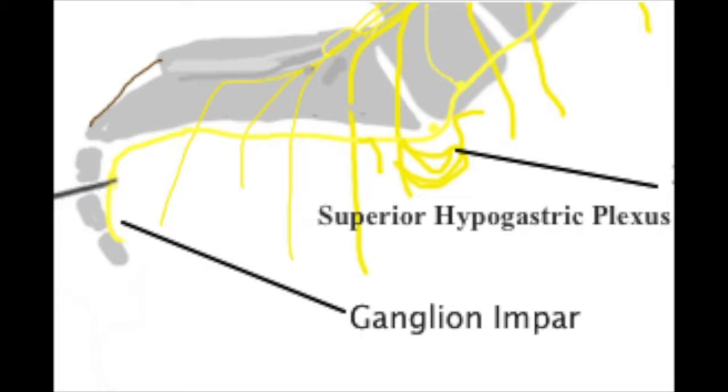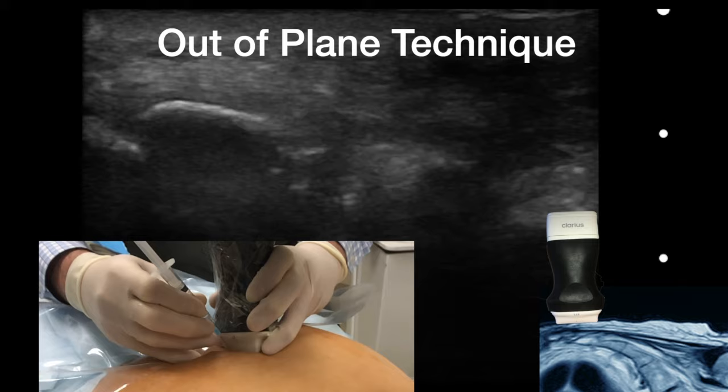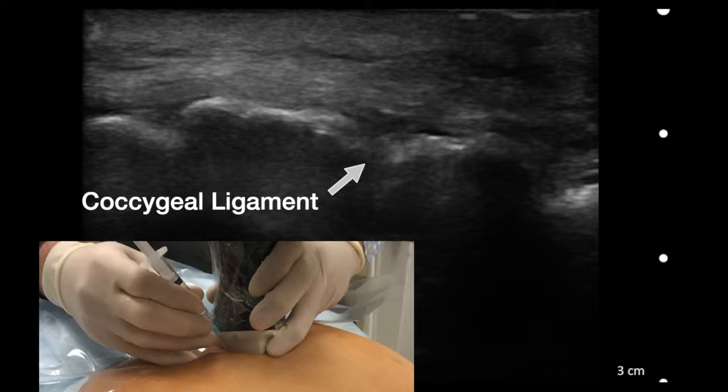You visualize in the longitudinal view the coccygeal ligament between the coccygeal bones. The target is anterior to the coccyx and posterior to the rectum.